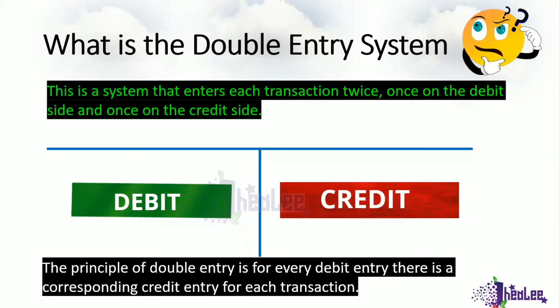The general principle of double entry is that once you have debited one account, the other account should be credited, and vice versa. There is no debit without a credit, or no credit without a debit for a transaction. Ensure that when you're doing your double entry, one account is debited and one account is credited.